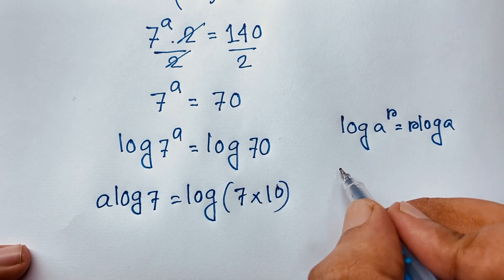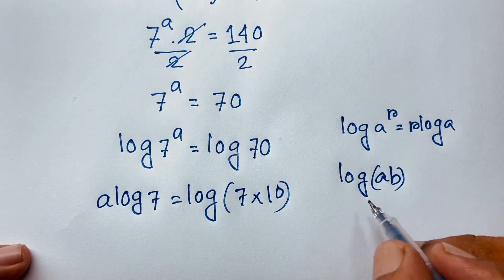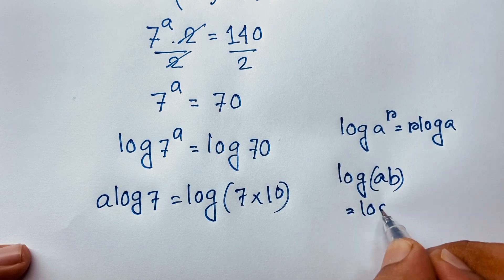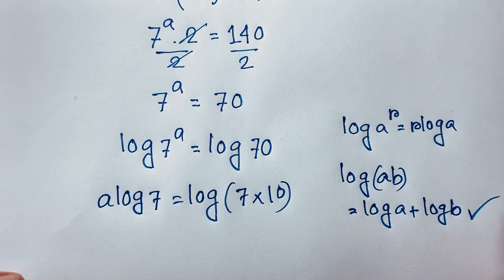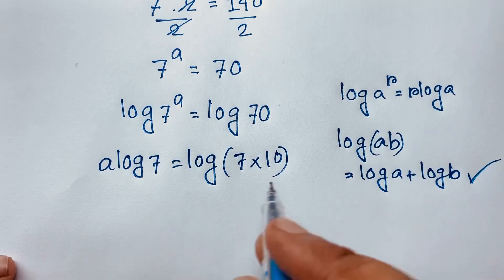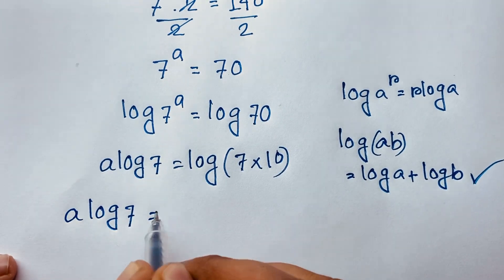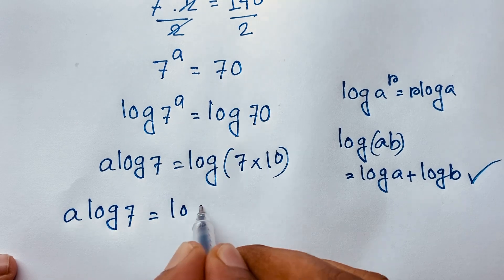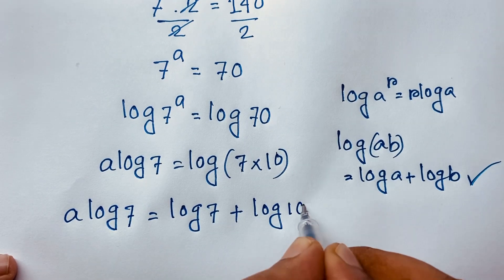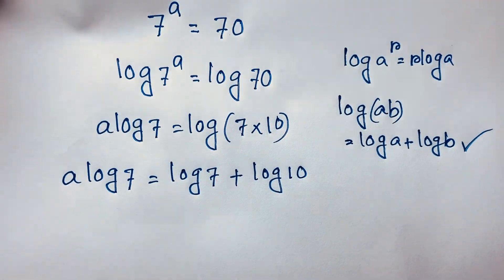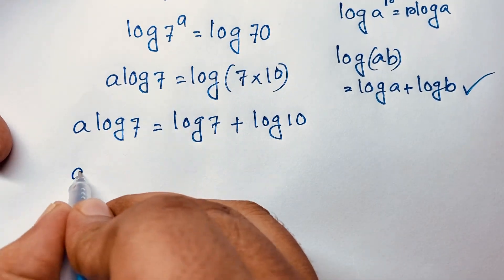We know that log(a times b) equals log a plus log b. Applying this product rule: a·log 7 equals log 7 plus log 10.